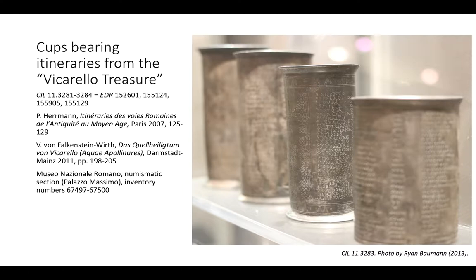Itineraries are textual descriptions of journeys, usually land journeys, indicating major waypoints and the distances between them. In the case of all four of these cups from Acquae Apollinares Novae, the itinerary in question is a land itinerary from Cades — modern Cadiz in Spain, on the southwest coast — all the way to Rome.